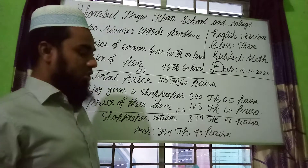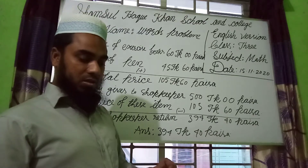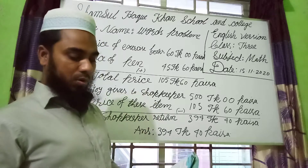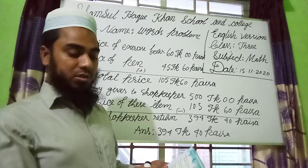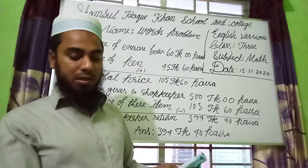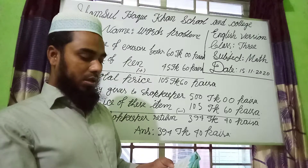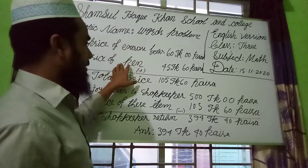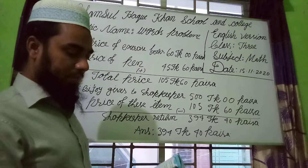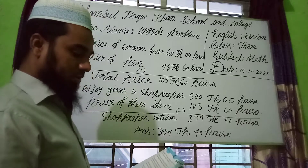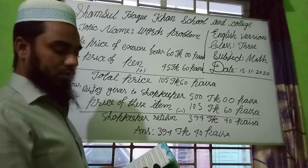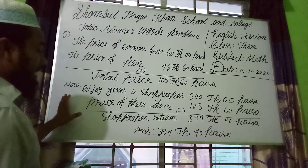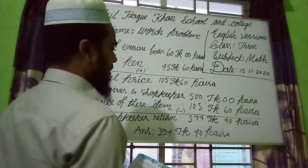There are two steps in this math. First, Vijay buys some products. The exercise books cost 60 Taka and the pen costs 45 Taka 60 Paisa — this will be addition. Then, Vijay gives 500 Taka to the shopkeeper, so the second step will be subtraction.